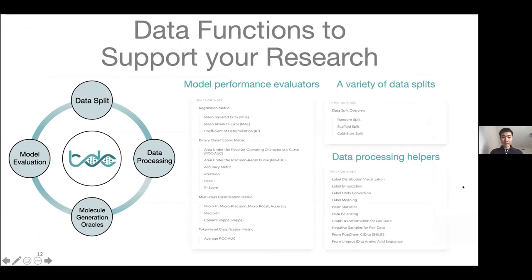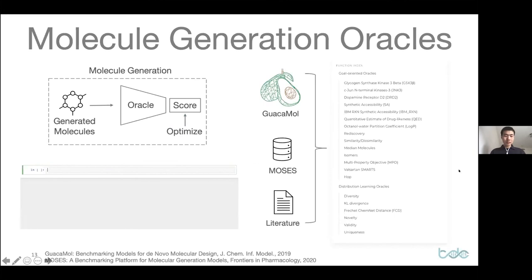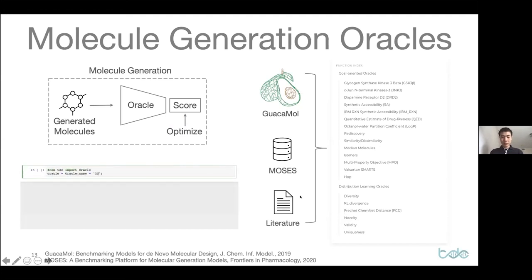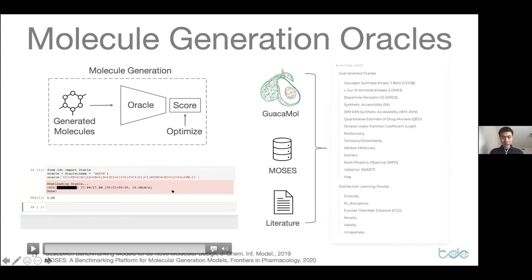In addition to all these datasets, we provide numerous data functions to support your research. We have data evaluators for all therapeutic tasks covered in TDC, lots of realistic data splits such as scaffold split for molecules, and data processing helpers like visualization, featurization, and graph transformation for link prediction and database-based queries. Finally, I want to mention molecule generation oracles, for which we provide a simple two-line framework. Molecule generation aims to generate molecules with desirable properties measured by oracles — different oracles correspond to different generation tasks. In TDC's first version, we collect oracles from Guacamol, Moses, and other papers. Simply specify an oracle name and a SMILES string, and you get the scores.